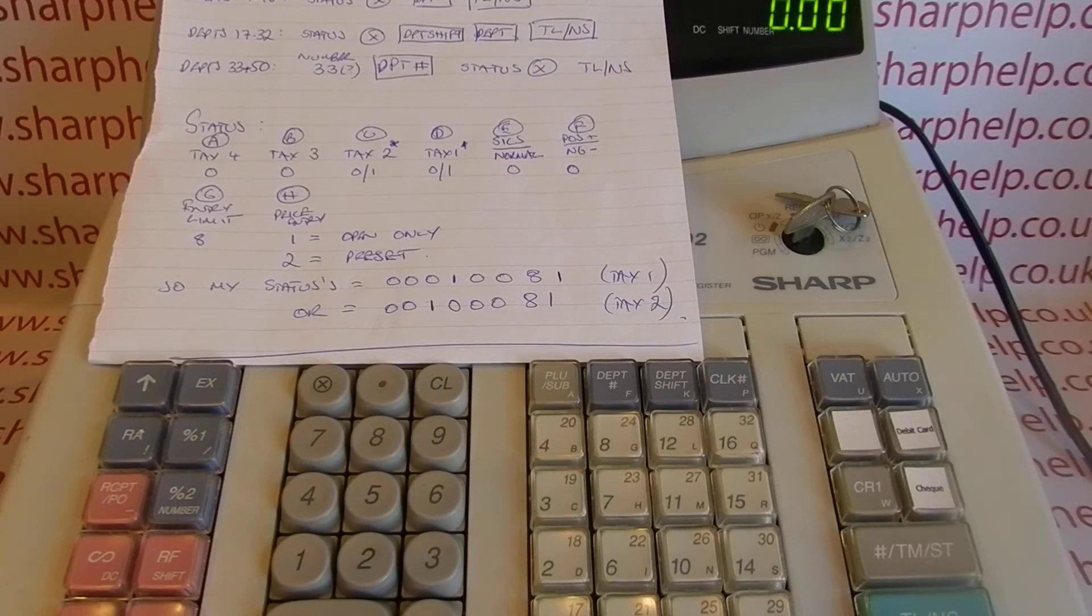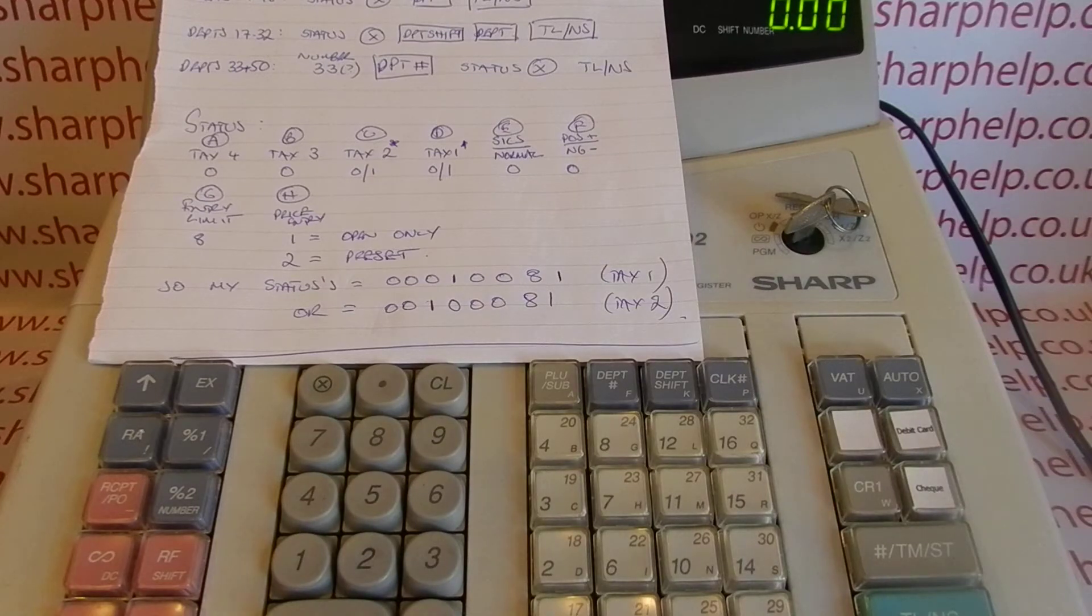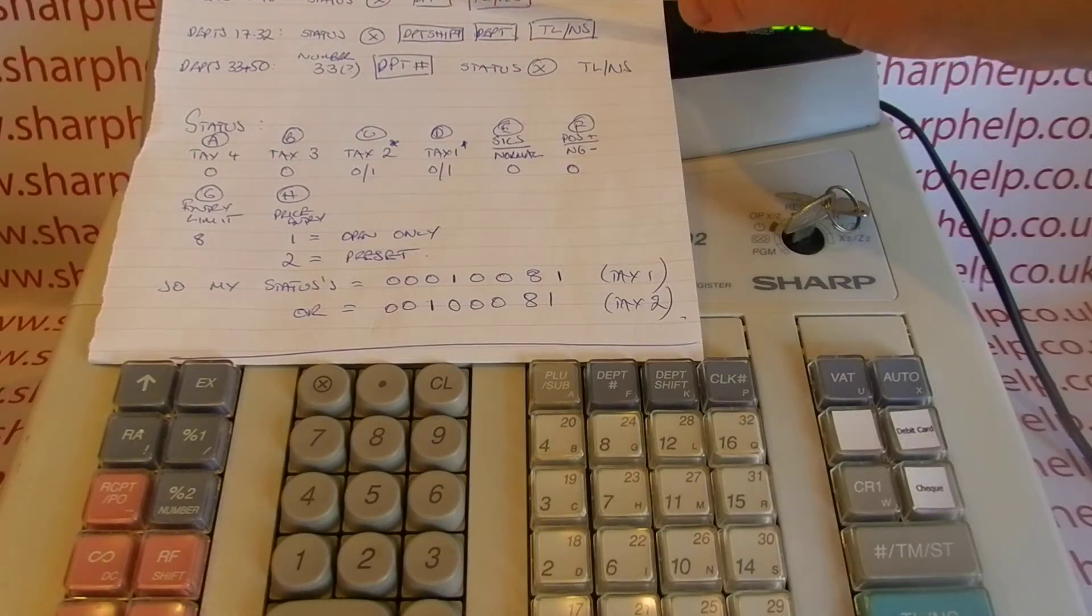There's kind of two halves to the problem. The most complicated bit which everyone struggles with is deciding what your status is. The issue with these machines is when you do this department status programming, you're not just choosing the tax rate for the department, you're actually setting a lot of other different things. If you're programming departments 1 to 16 and looking at page 27 of the manual, the easy bit is the second half.